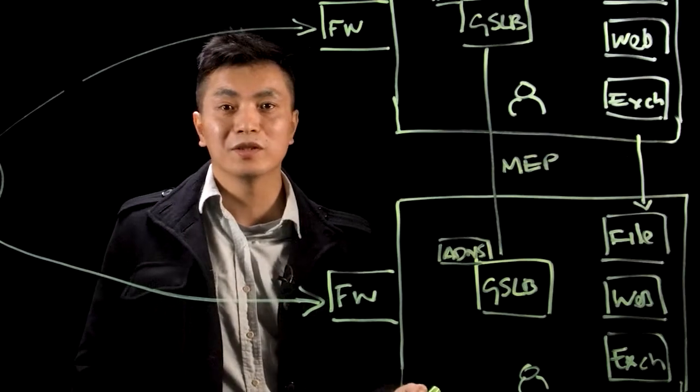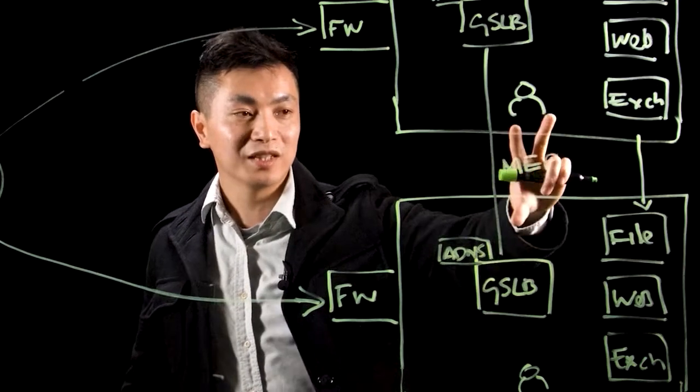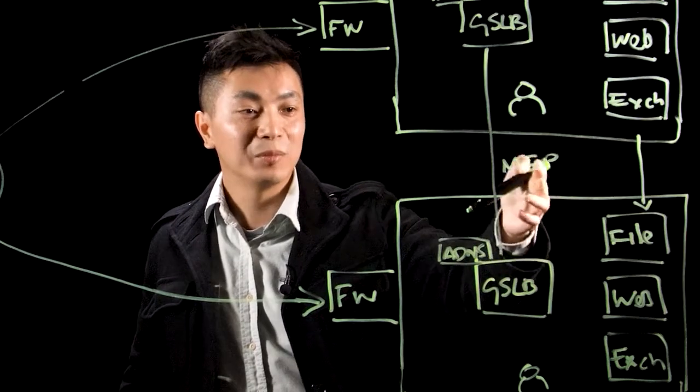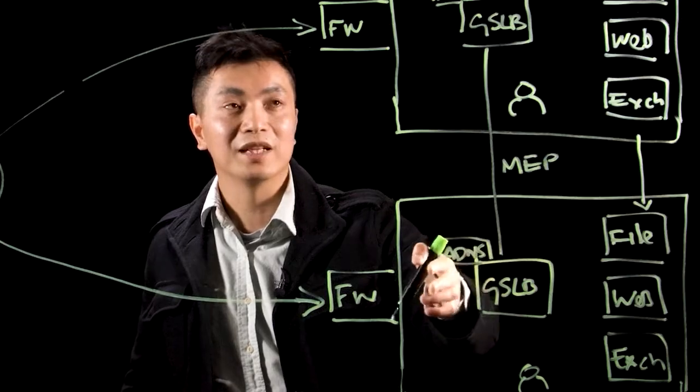There are three components to Citrix GSLB. The GSLB servers at each site, the metric exchange protocol which is generally referred to as the heartbeat between the servers, and an authoritative DNS server.